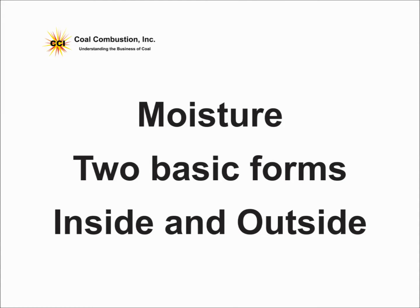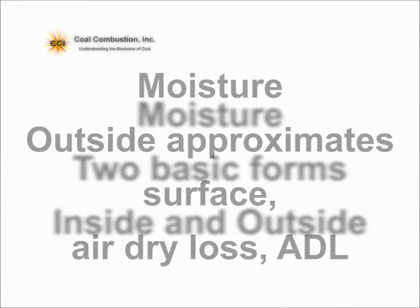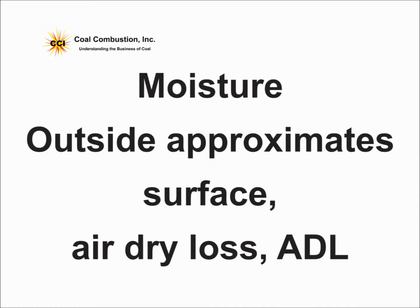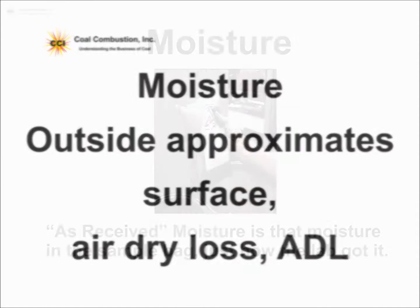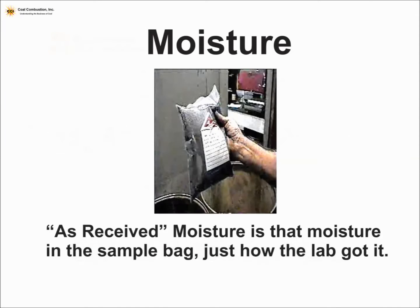There are two basic forms of moisture: the inside and the outside. The outside moisture approximates the surface moisture, and it's measured using the air dry loss. As received, of course, means the moisture in the bag that the coal sample came in.